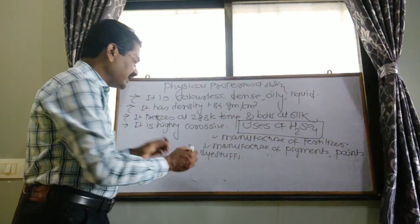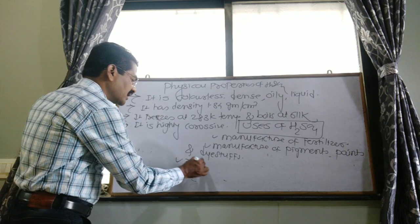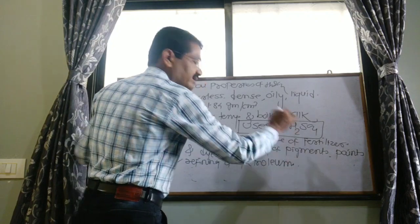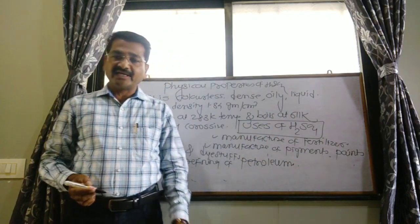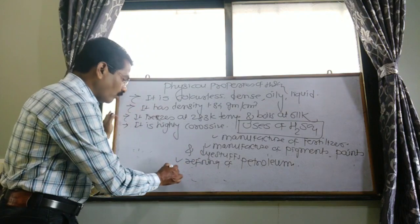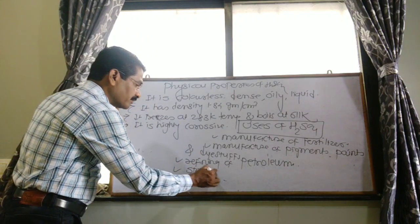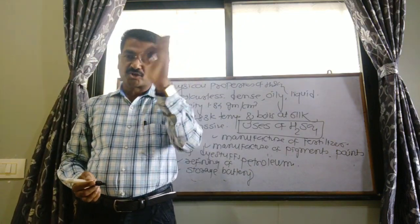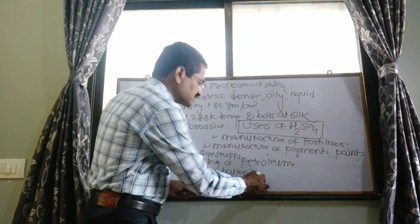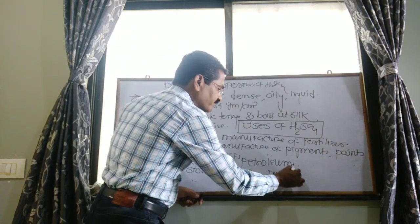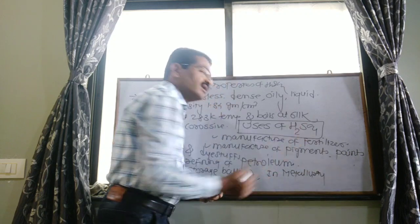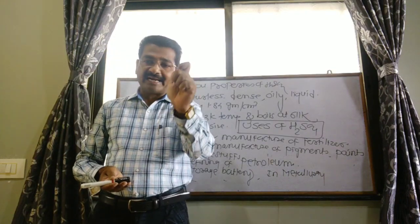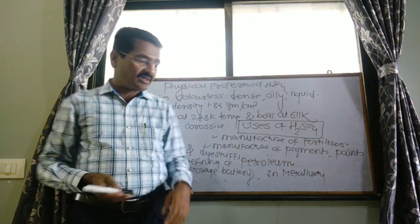Next, sulfuric acid is used in refining of petroleum, like sulfur dioxide. It is also used for the refining of petroleum in industries. Then, most importantly, it is used in storage batteries. Sulfuric acid is widely used in storage batteries. And it is also used in metallurgy — for cleaning of metals by electroplating and galvanizing.